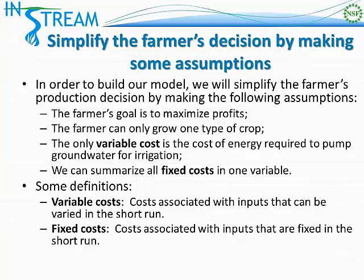Just some definitions regarding the assumptions that we just made. Variable costs are costs associated with inputs on the farm that can be varied in the short run — these are costs of inputs that the farmer can change very easily. Fixed costs, on the other hand, are costs associated with inputs that are fixed in the short run. These are costs on the farm that are generally fixed over a season — for example, the availability of equipment, the number of workers hired, or the type of land available to the farmer.